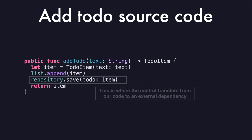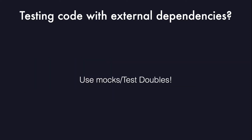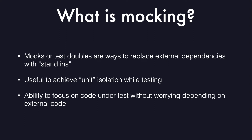Now, if we look at our new code under test, we can see that it has one external dependency, which is the to-do repository. How can we verify this behavior? We can use mocks or test doubles. Mocks or test doubles are ways to replace external dependencies with stand-ins, so all methods are called on the stand-in instead of real objects. This is very useful to achieve unit isolation when testing and gives us the ability to focus on the code under test without worrying too much about the external code.